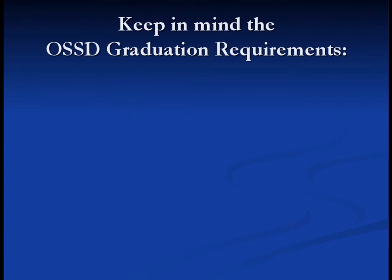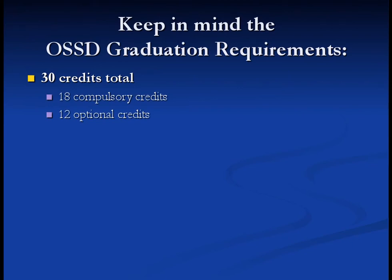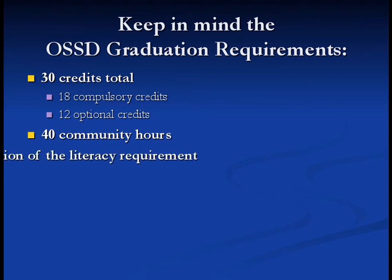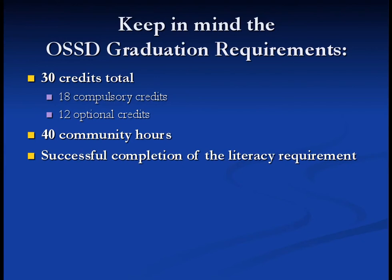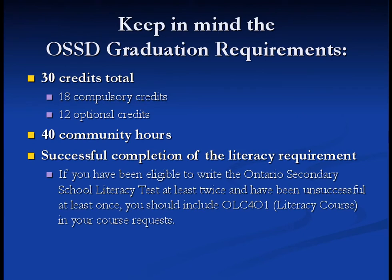Keep in mind the OSSD graduation requirements. You require 30 credits in total — 18 compulsory credits and 12 optional credits. 40 community hours must be completed and recorded. You must successfully complete the literacy requirement. If you have been eligible to write the Ontario Secondary School Literacy Test at least twice and have been unsuccessful at least once, you should include OLC 401 Literacy Course in your course requests.